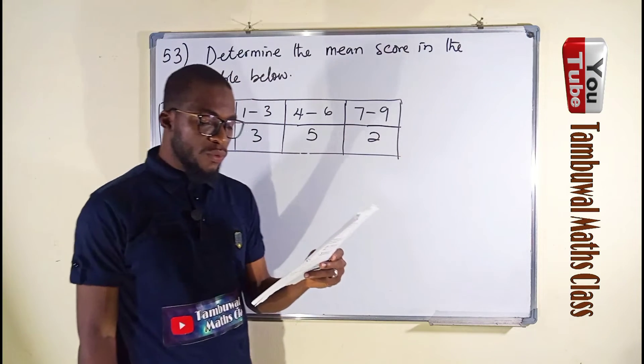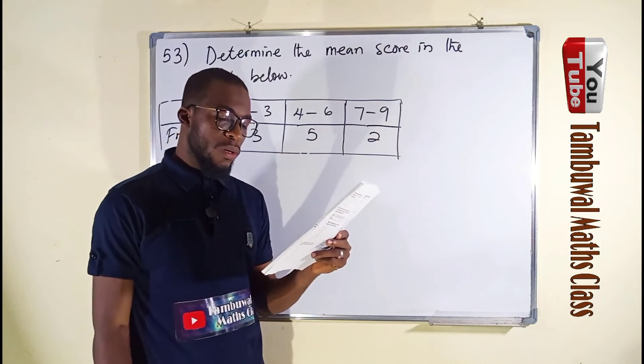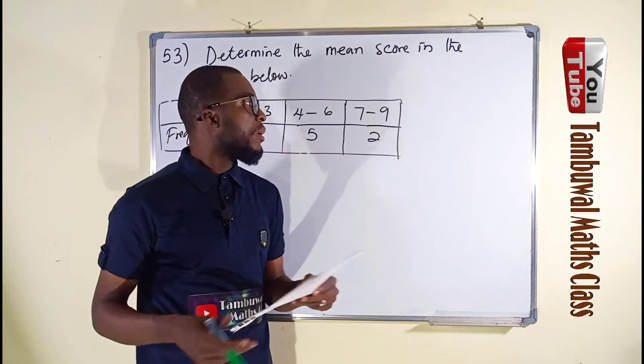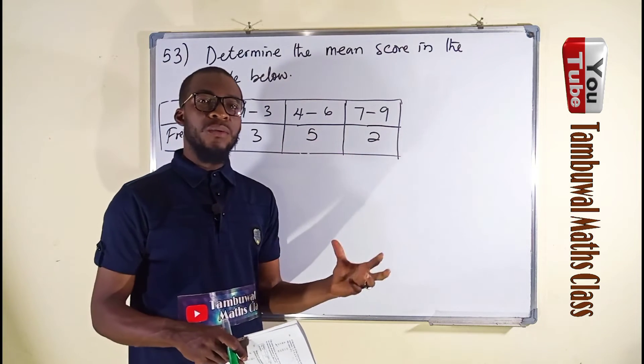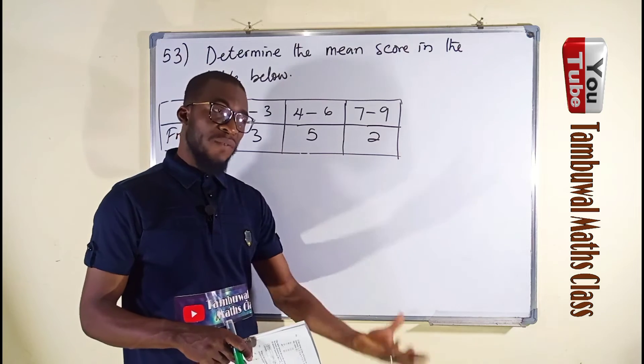Question number 53 says we should determine the mean score in the table below. This is grouped data. We are asked to find the mean, and the mean is always the average.